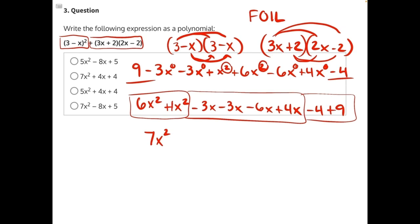Then we will have a negative 3x and a negative 3x combined will give us a negative 6x. A negative 6x and a positive 4x will give us a negative 2x. And then a negative 4 plus 9 will give us a positive 5.